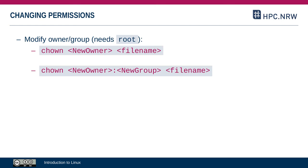If you have admin rights, you can change the owner of a file or directory. On a cluster where you don't have admin, you cannot do that. The command for it is chown — change owner. You specify the new owner's username and then the file. If you need a group that's not the user's primary group, you can specify that with a colon followed by the group name.